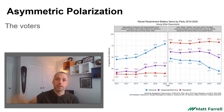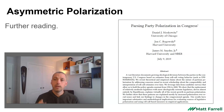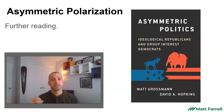If you want to read more about asymmetric polarization, the Moskowitz paper is very insightful with a lot of good data, and there's an entire book by Grossman and Hopkins that talks about asymmetric politics — not just purely voting behavior, but structural differences between the parties and the groups that support them that could be contributing to asymmetric polarization.